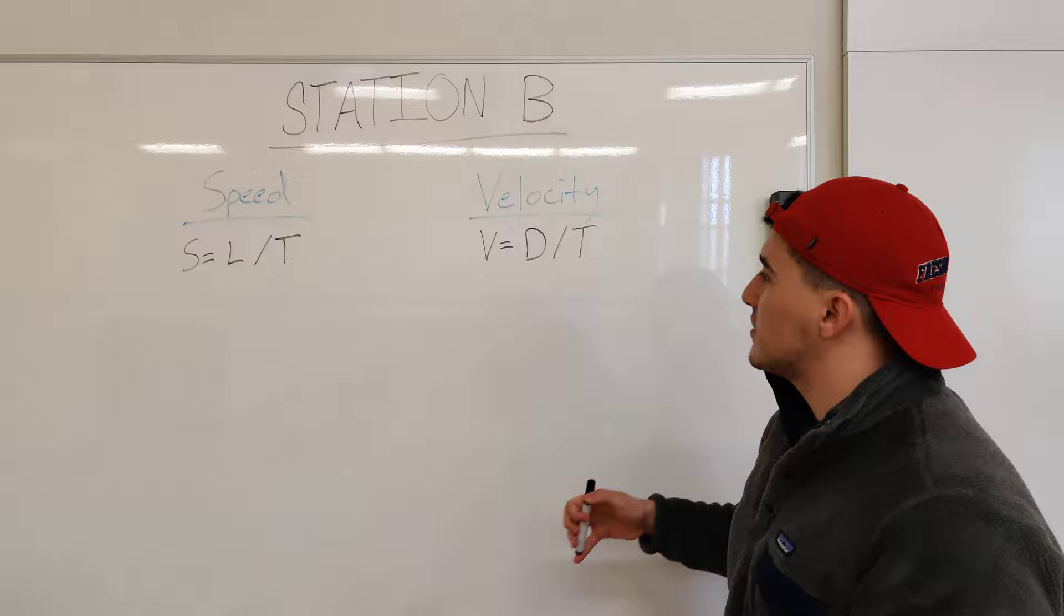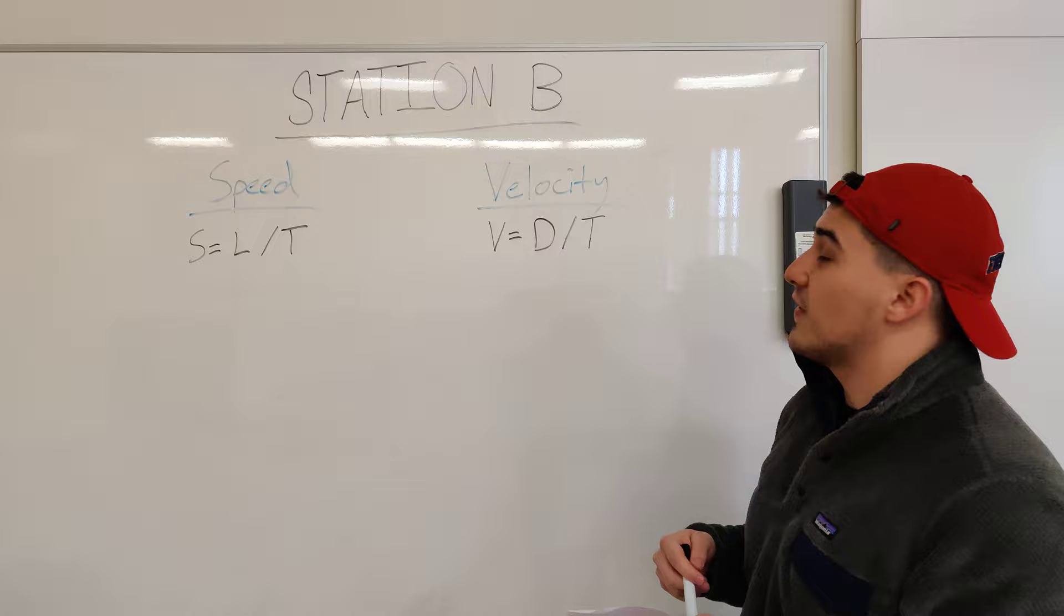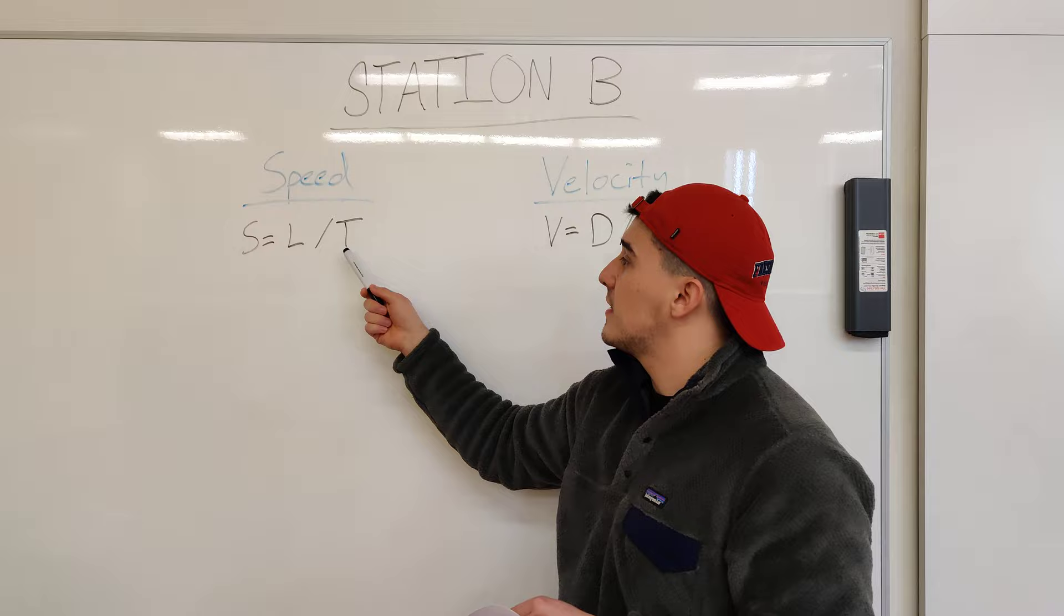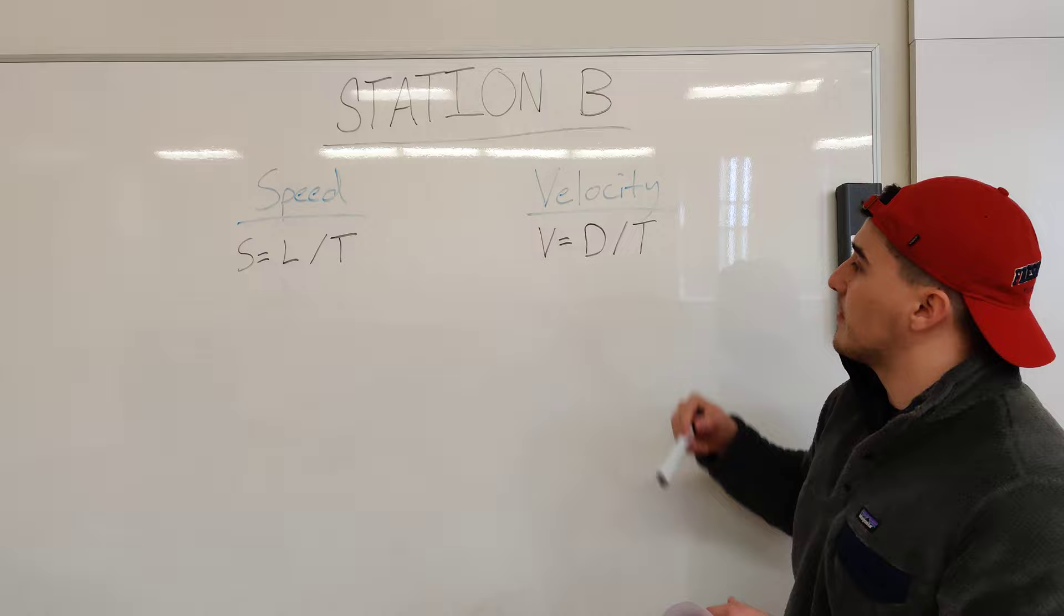Speed is a scalar quantity, meaning it only has magnitude, while velocity is a vector quantity, meaning it has magnitude and direction. The equations are pretty simple: speed equals length divided by time (S = L/T), while velocity equals displacement divided by time (V = D/T).